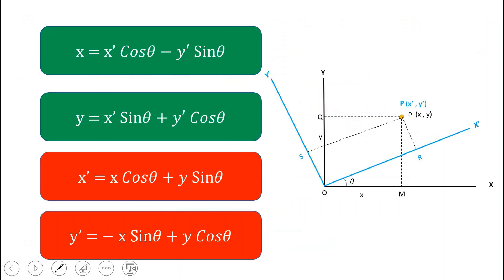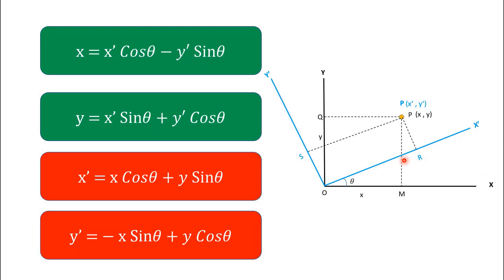So we have derived the relationship between x and y in terms of x-dash, y-dash, and theta, and also x-dash and y-dash in terms of x, y, and theta. When we rotate both axes by angle theta, these four equations describe the complete transformation. I hope you understand.